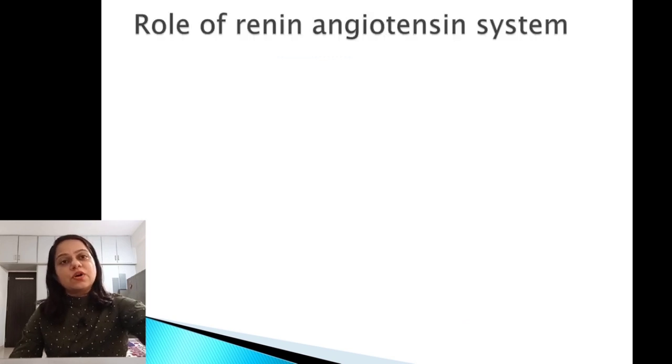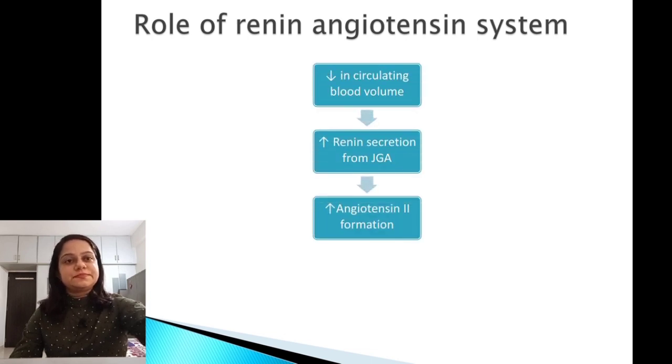There is also a role of renin-angiotensin system. Decrease in circulating blood volume increases renin secretion from juxtaglomerular apparatus due to renal hypoxia. This released renin causes more formation of angiotensin 2.